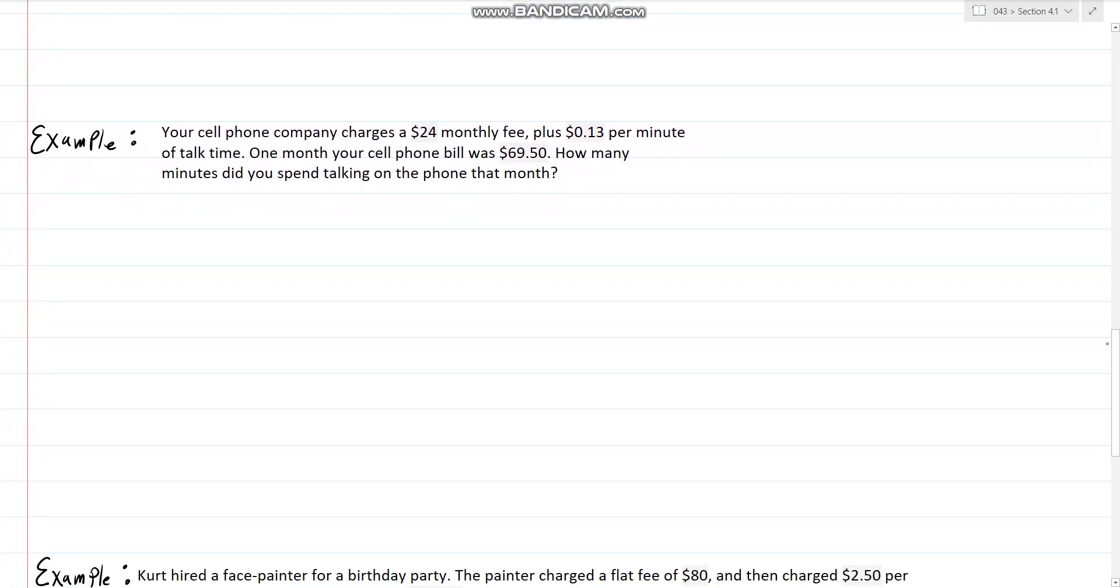In the next example, we have a cell phone company charging $24 monthly fee plus 13 cents per minute of talk time. One month, our cell phone bill was $69.50. How many minutes did we talk on the phone? It's basically the same scenario, different story. We have $24 monthly fee as the base fee, and then per minute. So we have y equals 0.13t for minutes plus $24.